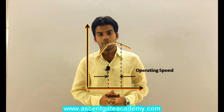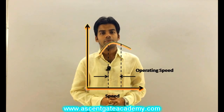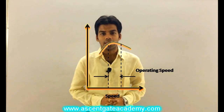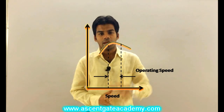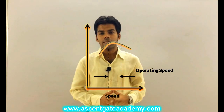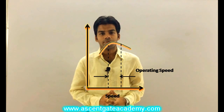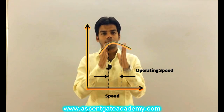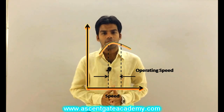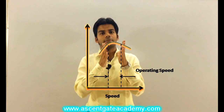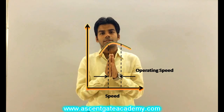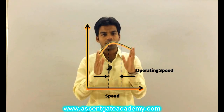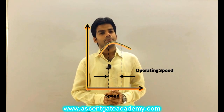You can see the speed versus efficiency curve here. As the speed increases, first the efficiency increases. And after a certain point, the efficiency drops. You can also see that within a certain range of speed, we get the maximum efficiency. And if the speed is fluctuating a lot, obviously the efficiency will drop.